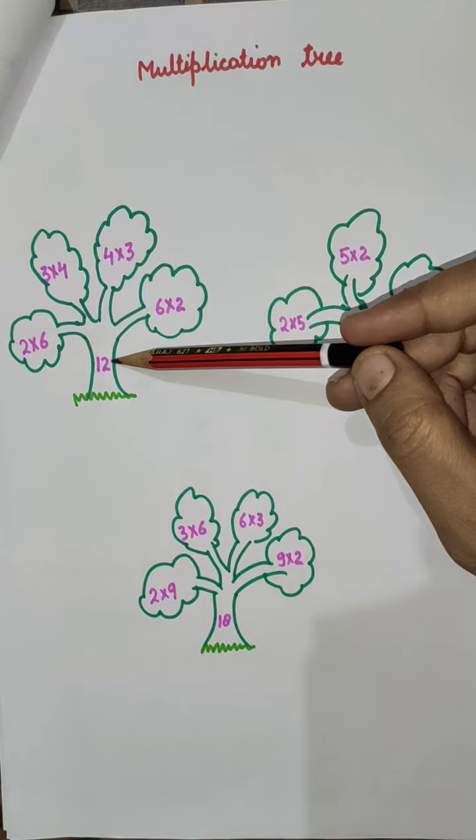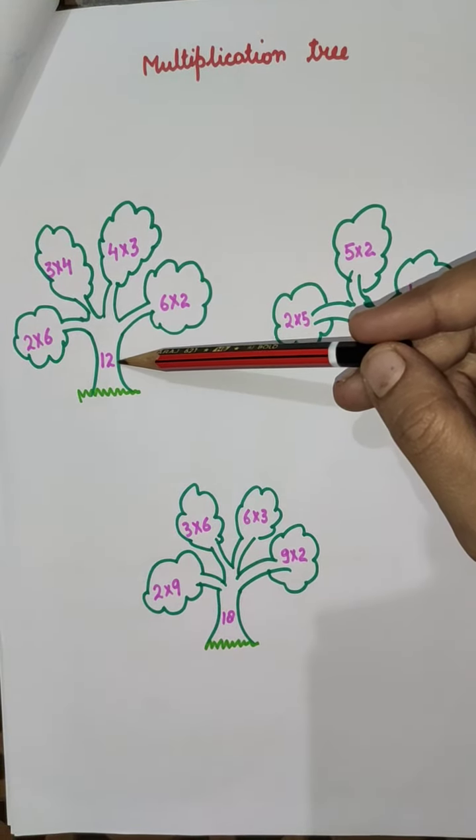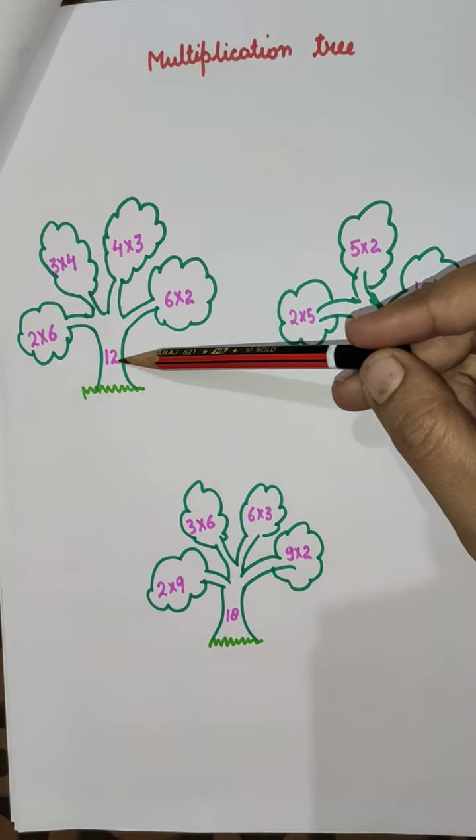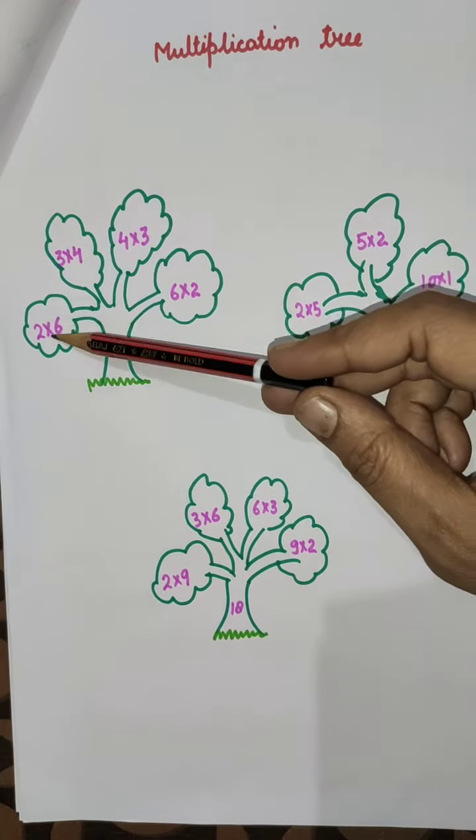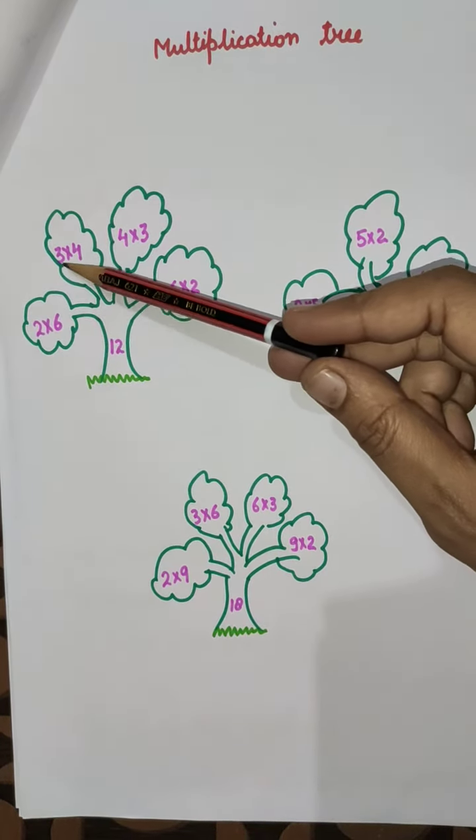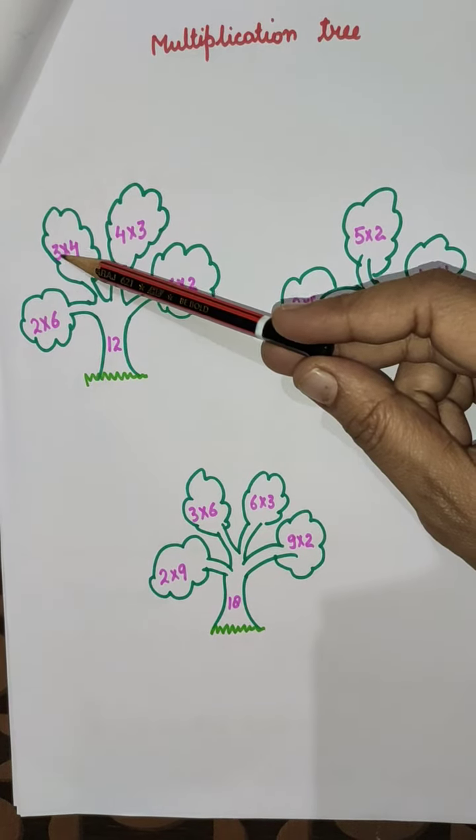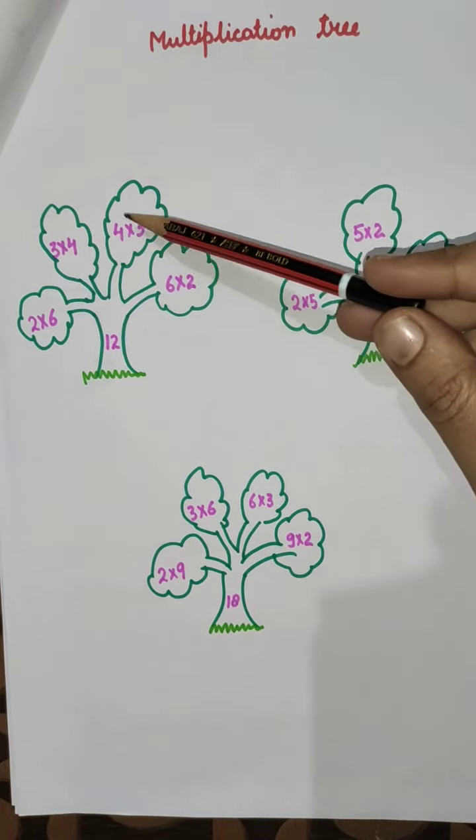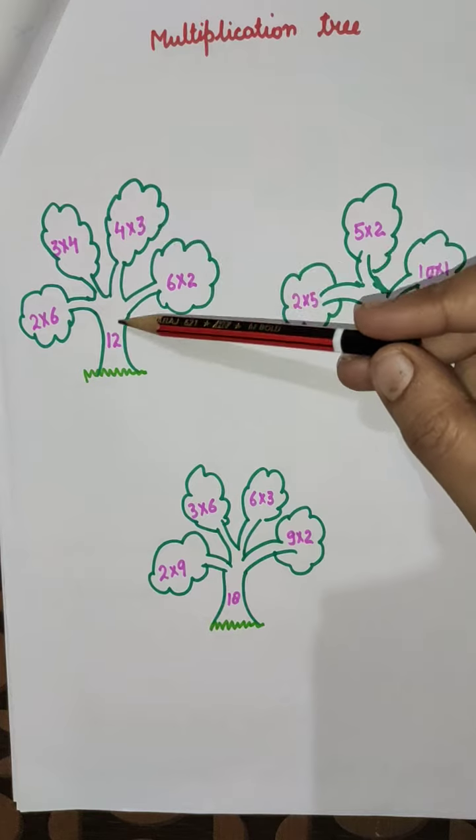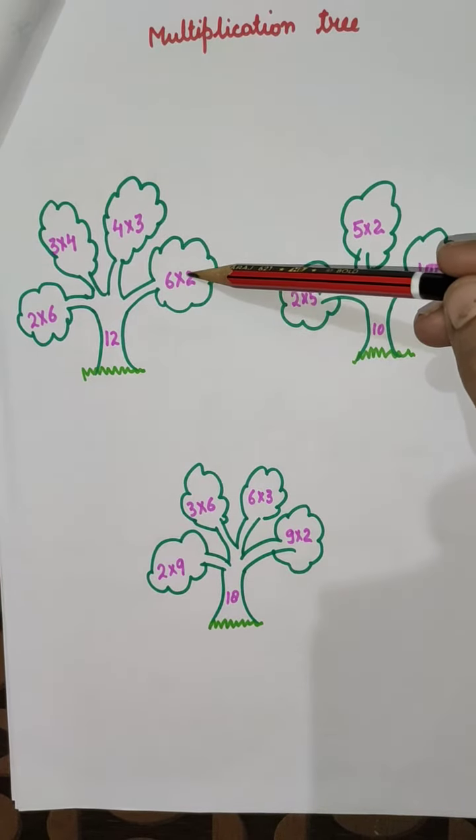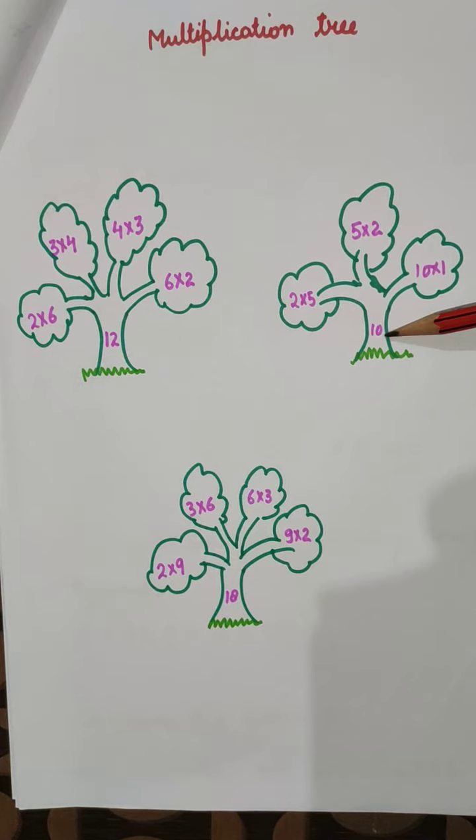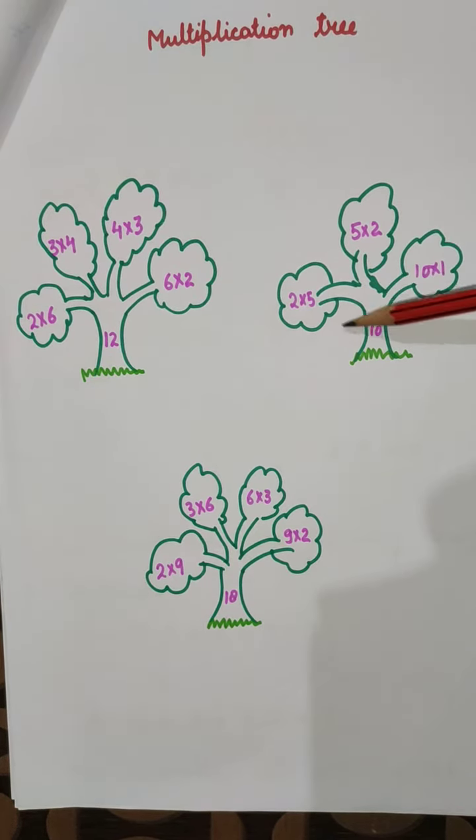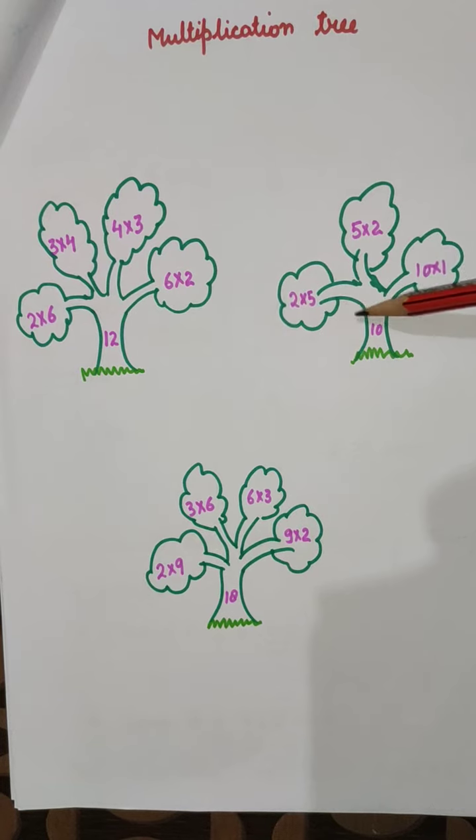The first question is 12. You have to make the multiplication tree of 12. So you can see 12 will come in the table of 2: 2×6 = 12, also in the table of 3: 3×4 = 12, in the table of 4: 4×3 = 12, in the table of 6: 6×2 = 12. Now here's 10. Multiplication tree of 10: 10 will come in the table of 2, 2×5 = 10, again 5×2 = 10, then 10×1 = 10.